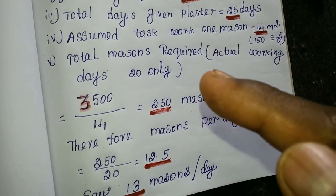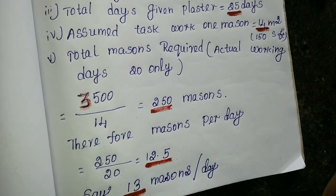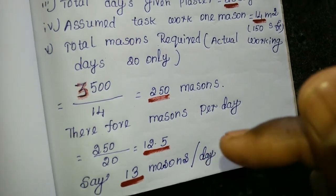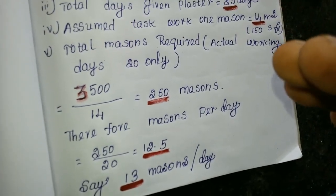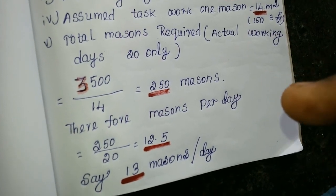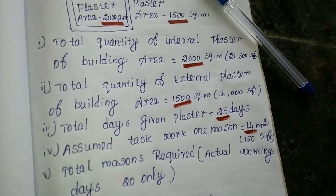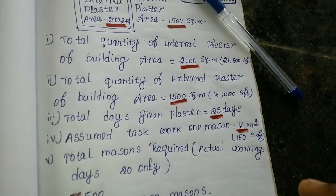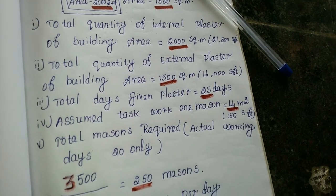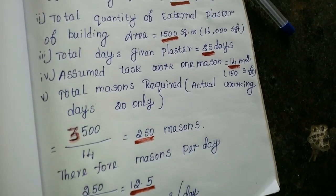Now I need to complete: 20 divided by 12.5 — it is an accurate value. It is 30 per day. In the plastering area, it is 20 days, then 13 days.